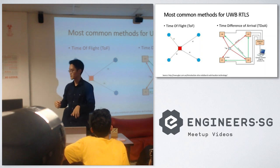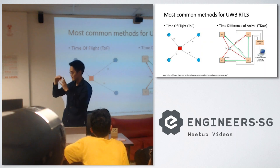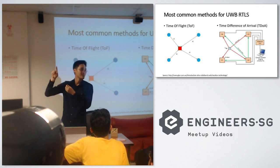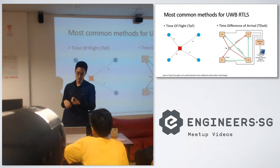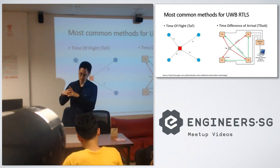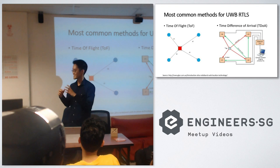For Time Difference of Arrival, the tag just sends a ping and everyone receives it. You need very accurate timing — all anchors need to know exactly when the tag sent the ping, then you can calculate the difference. It needs synchronization. I looked at the application sheet and saw the need for a synchronization signal — it seems quite complicated, and every single anchor needs to be time-synced.